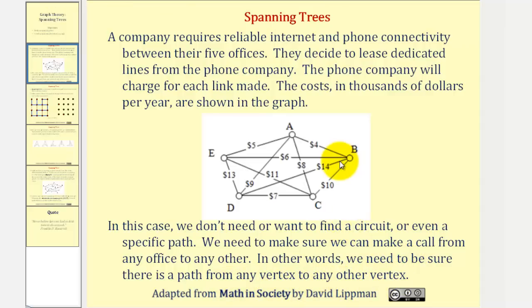For example, we may have a simple path that looks like this. All the vertices are connected in a path and we don't have any circuits. This is a possible spanning tree for this graph.